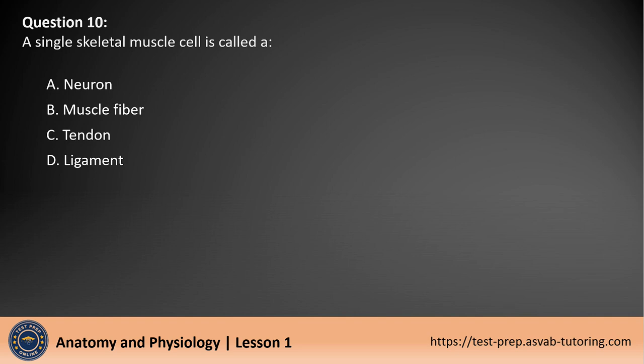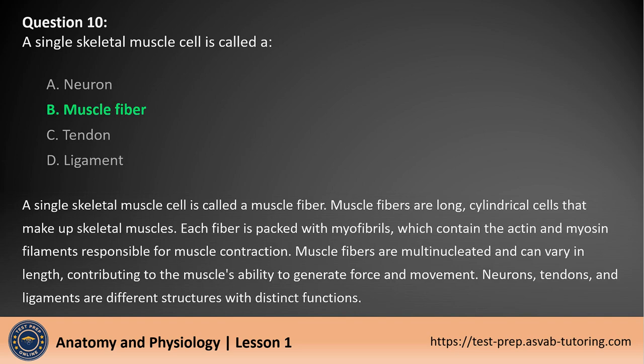Question 10. A single skeletal muscle cell is called: A. Neuron. B. Muscle fiber. C. Tendon. D. Ligament. The answer is B. A single skeletal muscle cell is called a muscle fiber. Muscle fibers are long, cylindrical cells that make up skeletal muscles. Each fiber is packed with myofibrils, which contain the actin and myosin filaments responsible for muscle contraction. Muscle fibers are multinucleated and can vary in length, contributing to the muscle's ability to generate force and movement. Neurons, tendons, and ligaments are different structures with distinct functions.